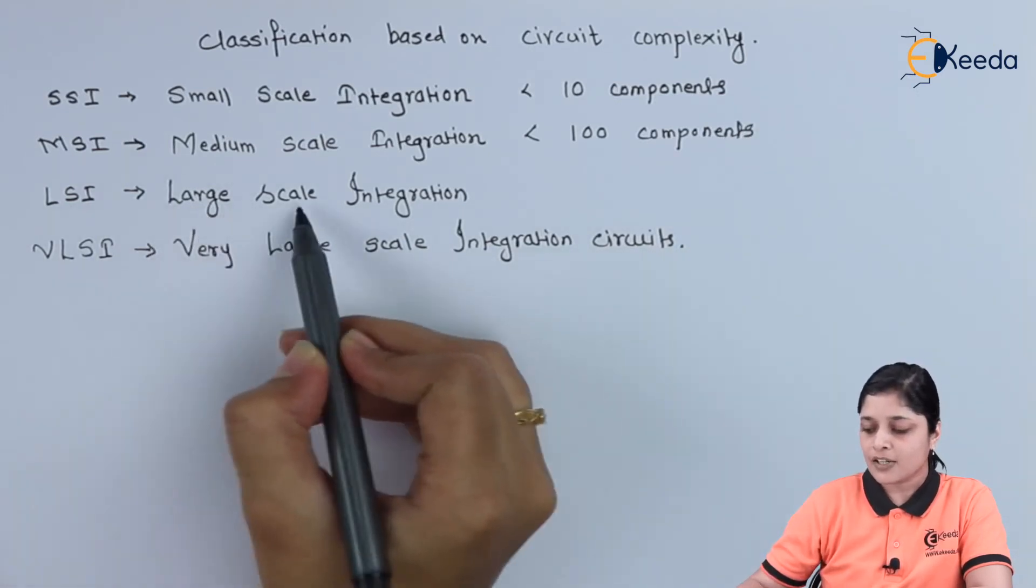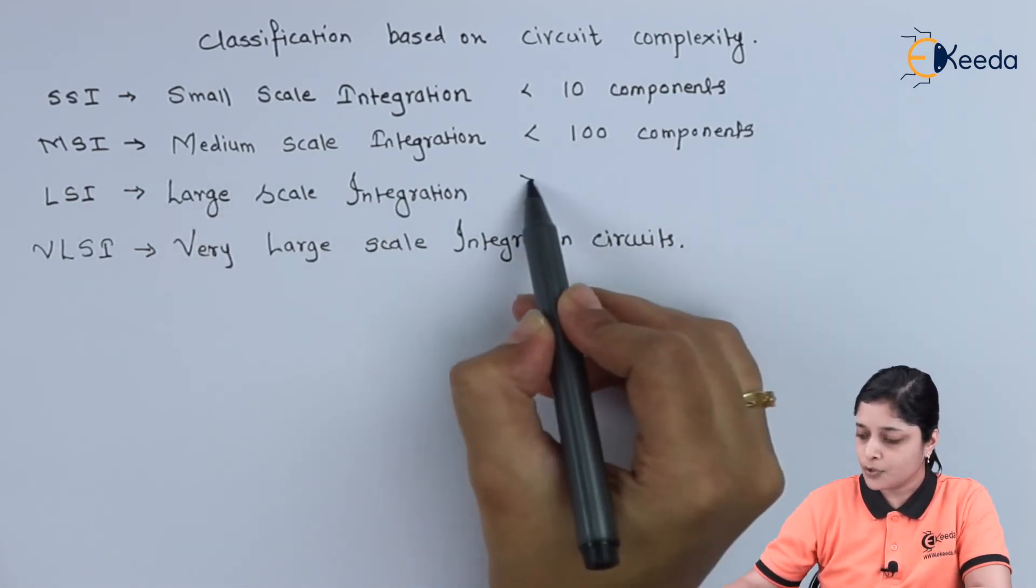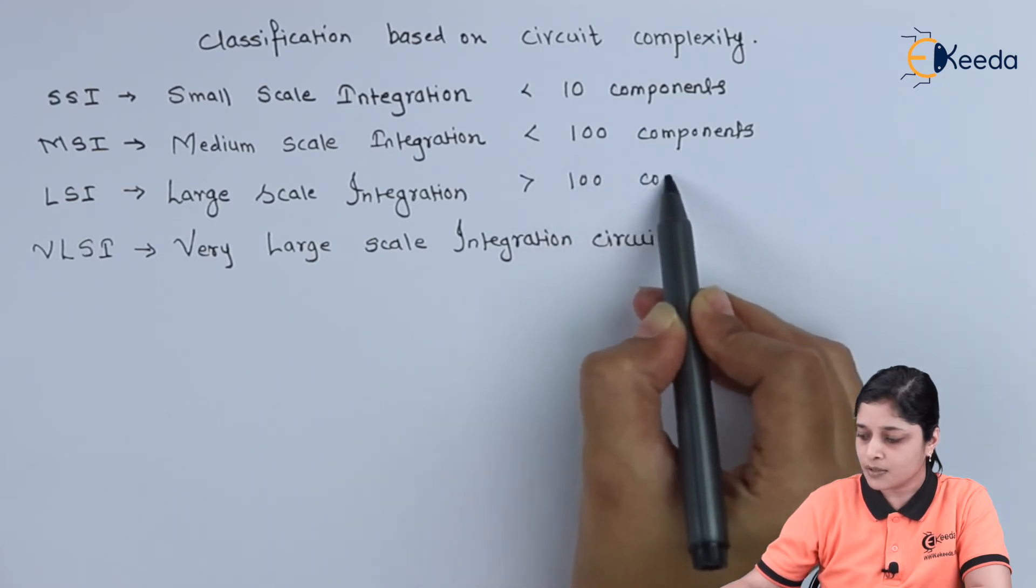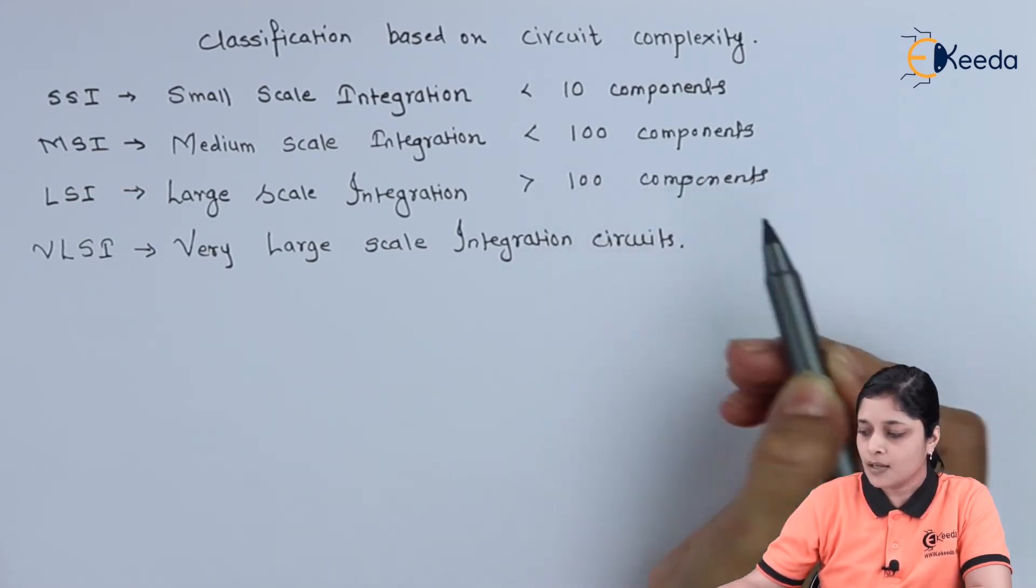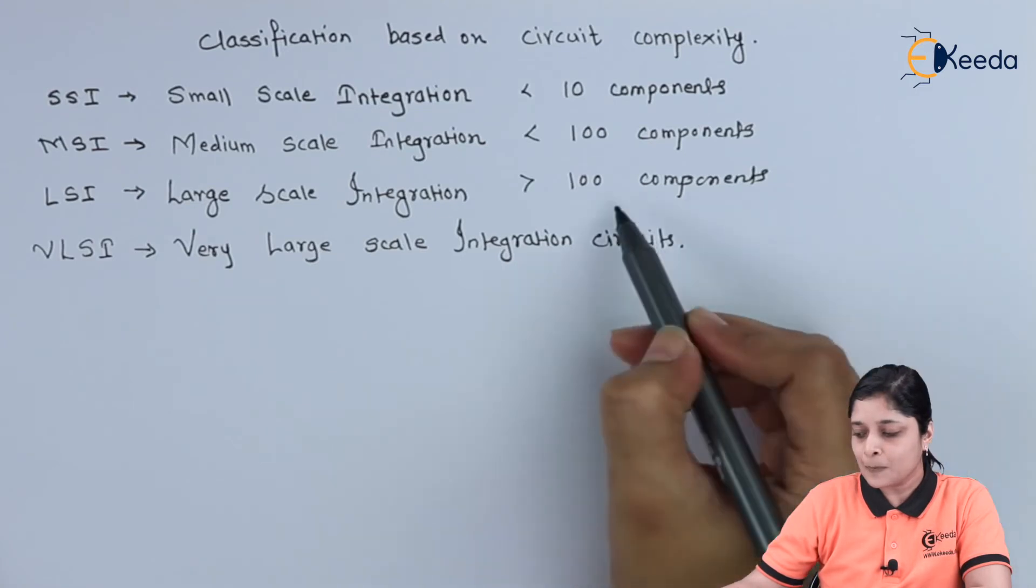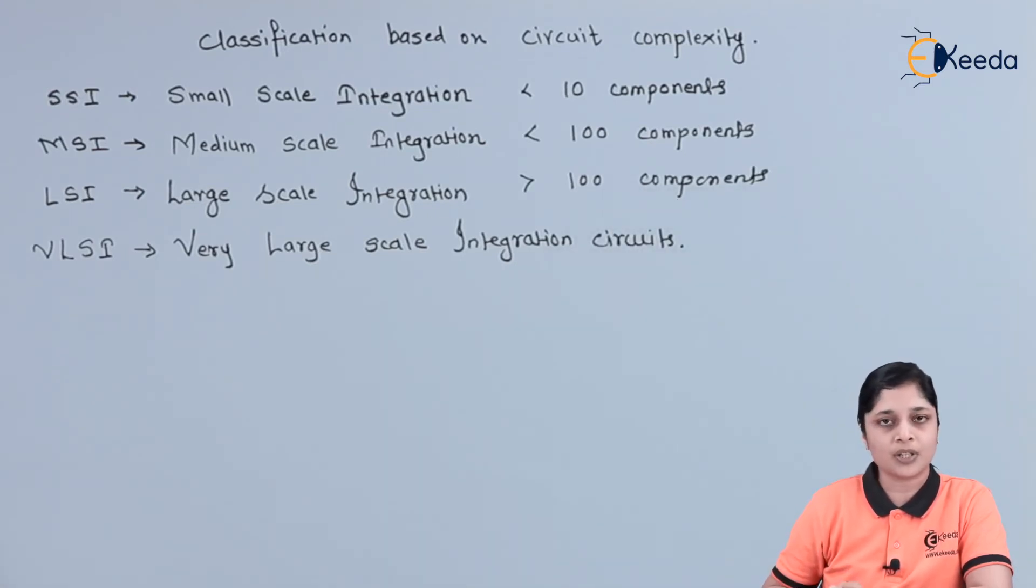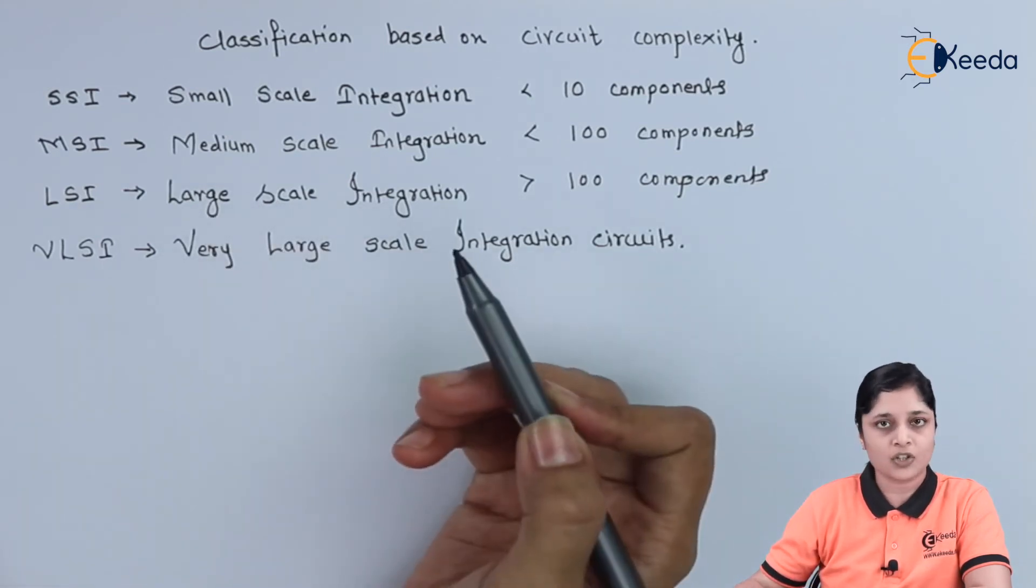In Large Scale Integration, we have to use greater than 100 components, or we can say more than 100 components are present on a chip while designing the LSI technology.